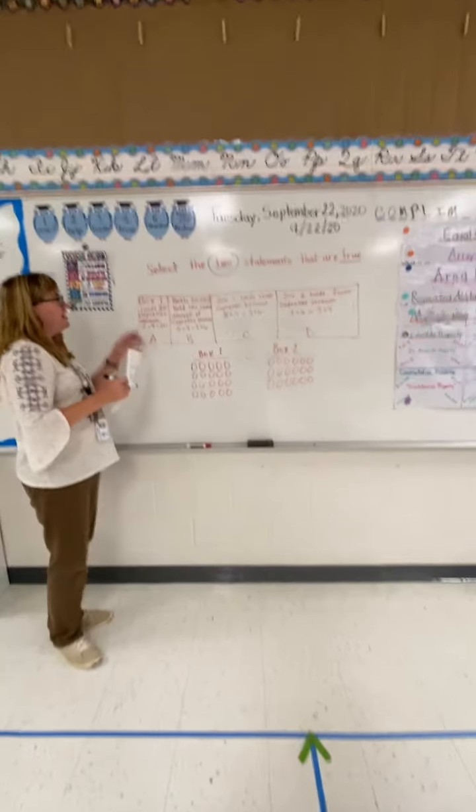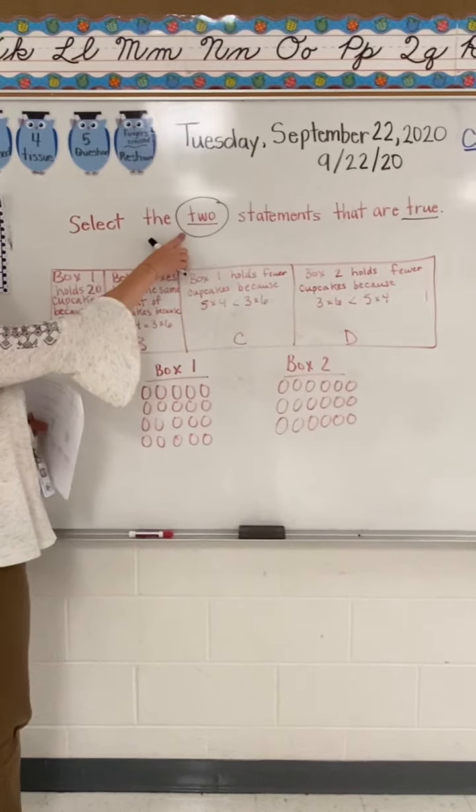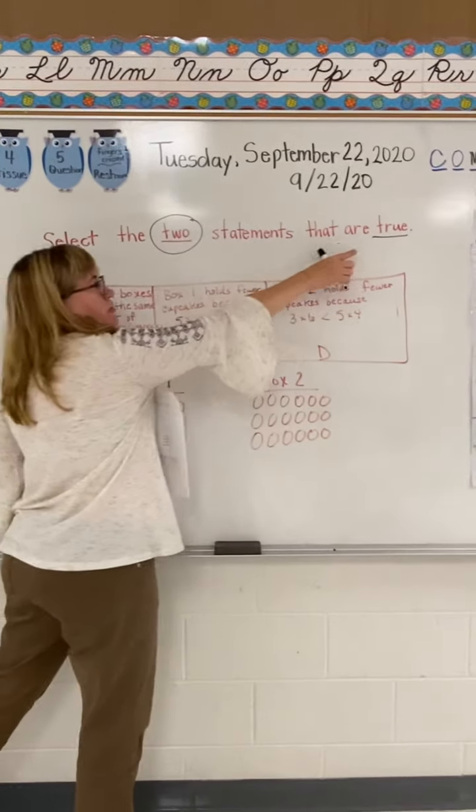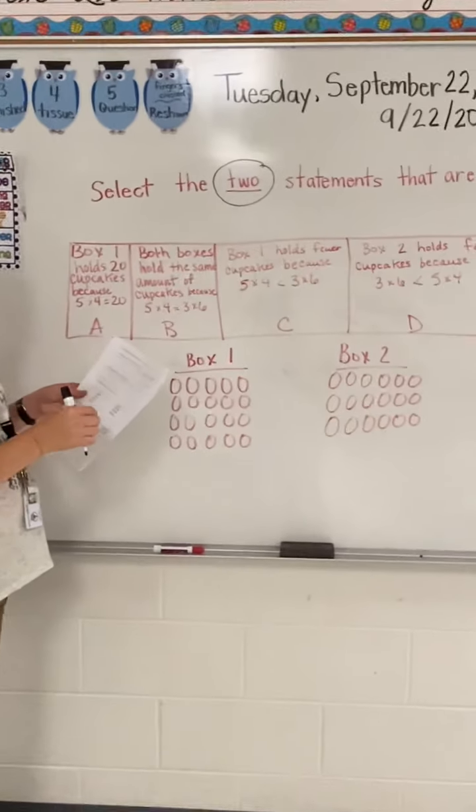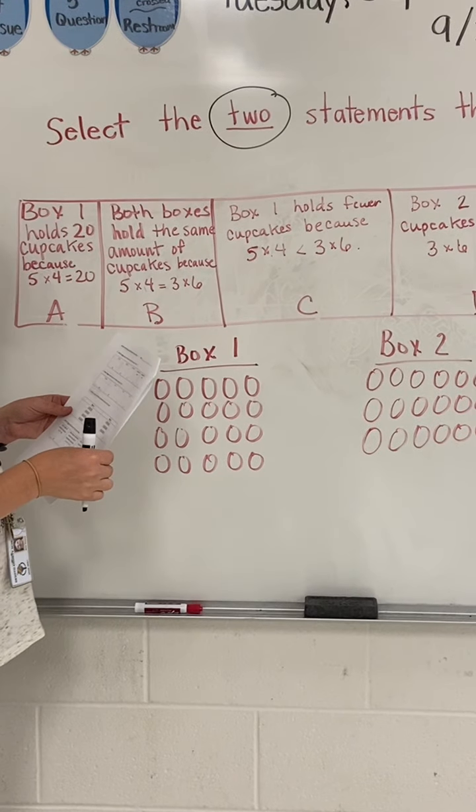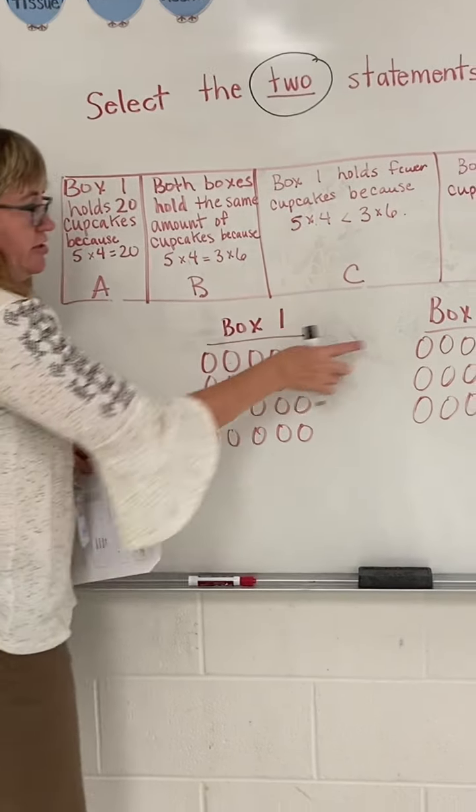All right, so let's look at this question. It says select the two statements that are true. Keep in mind, they're wanting two answers and they're wanting the statements that are true. The question tells you that a bakery baked birthday cupcakes in two boxes of two sizes. So here's our two boxes.